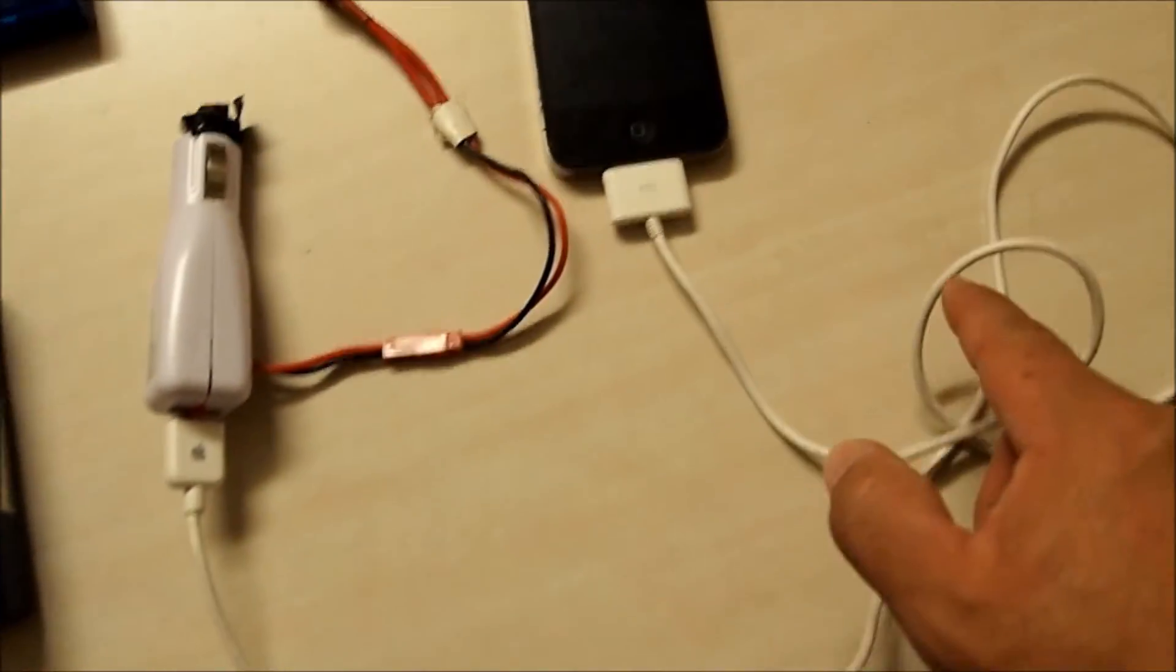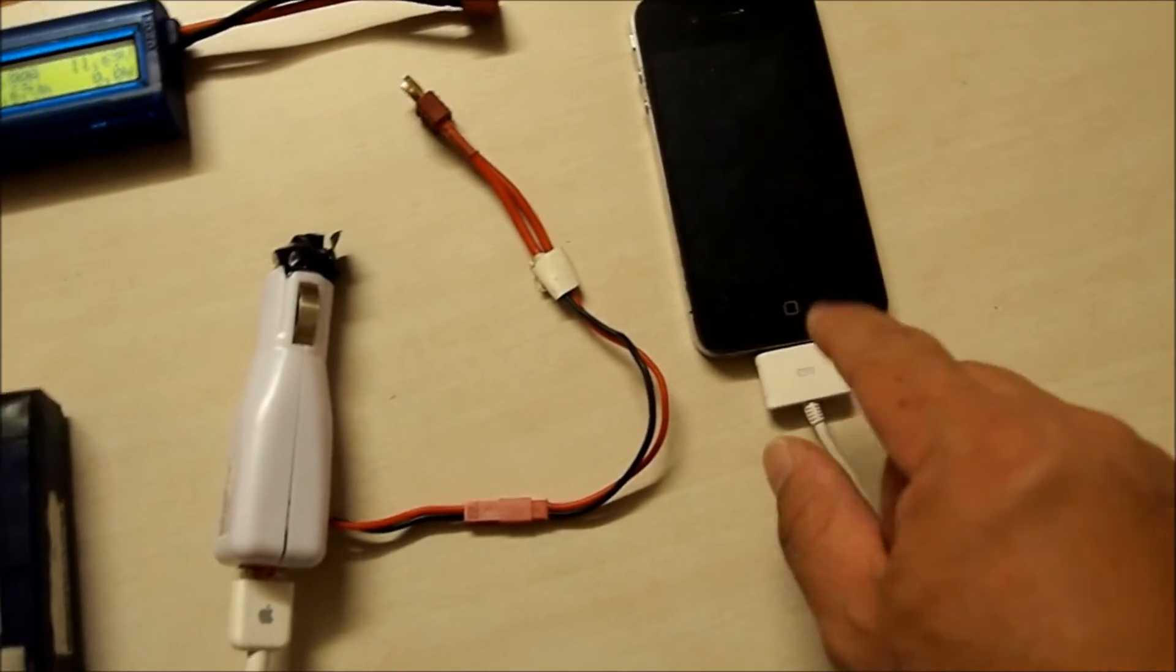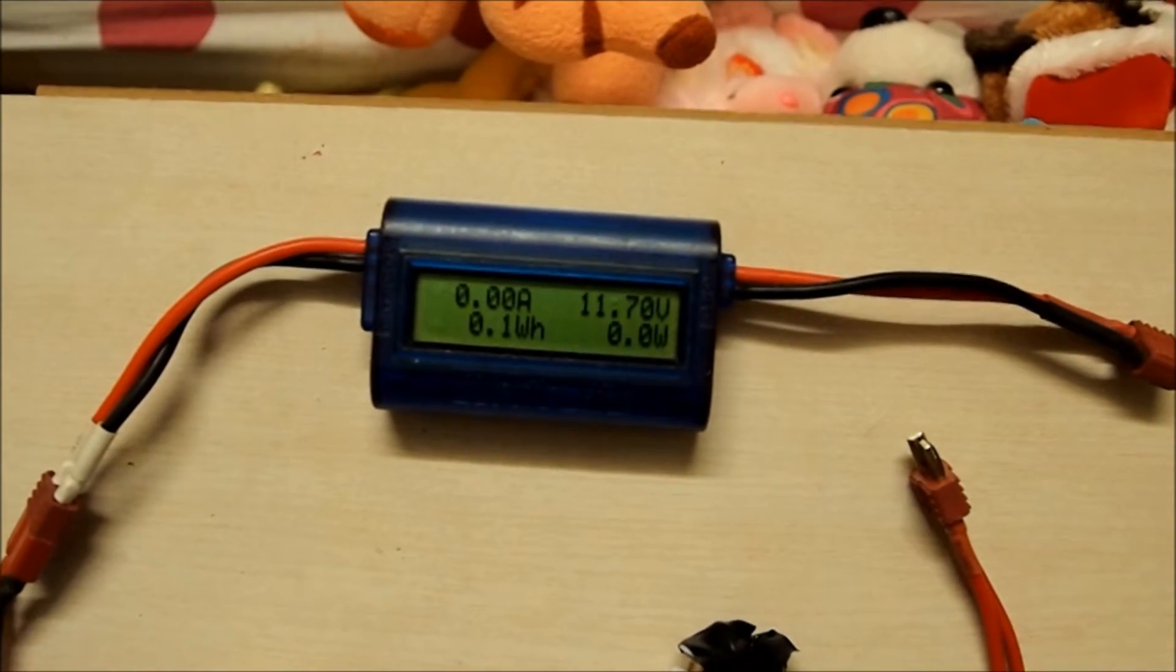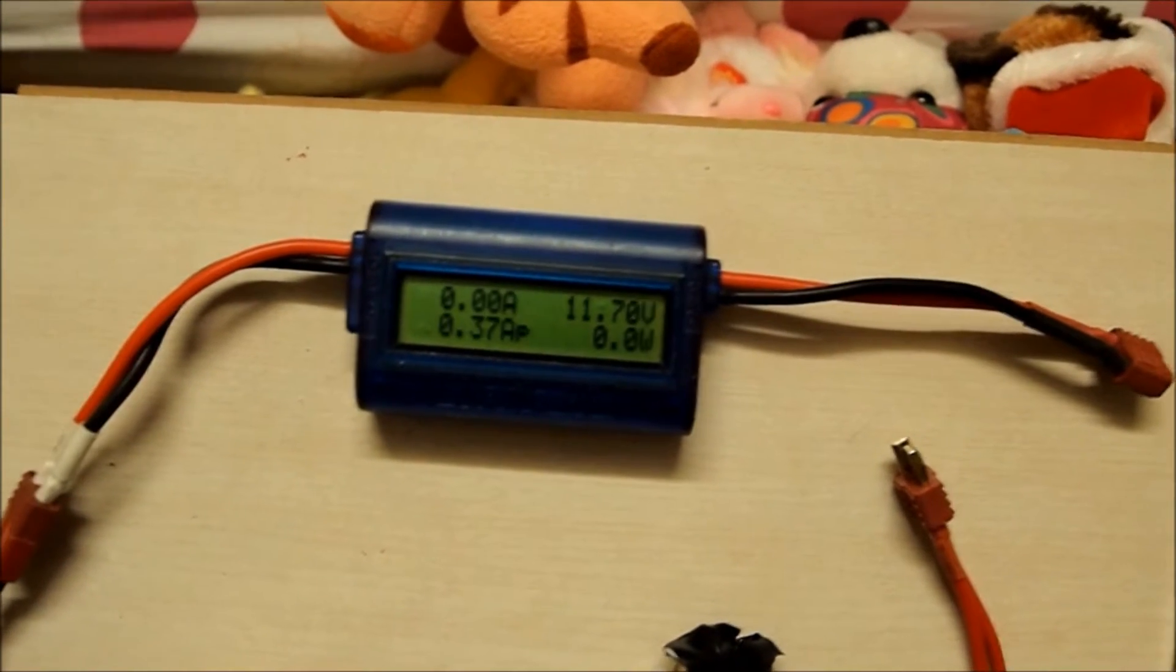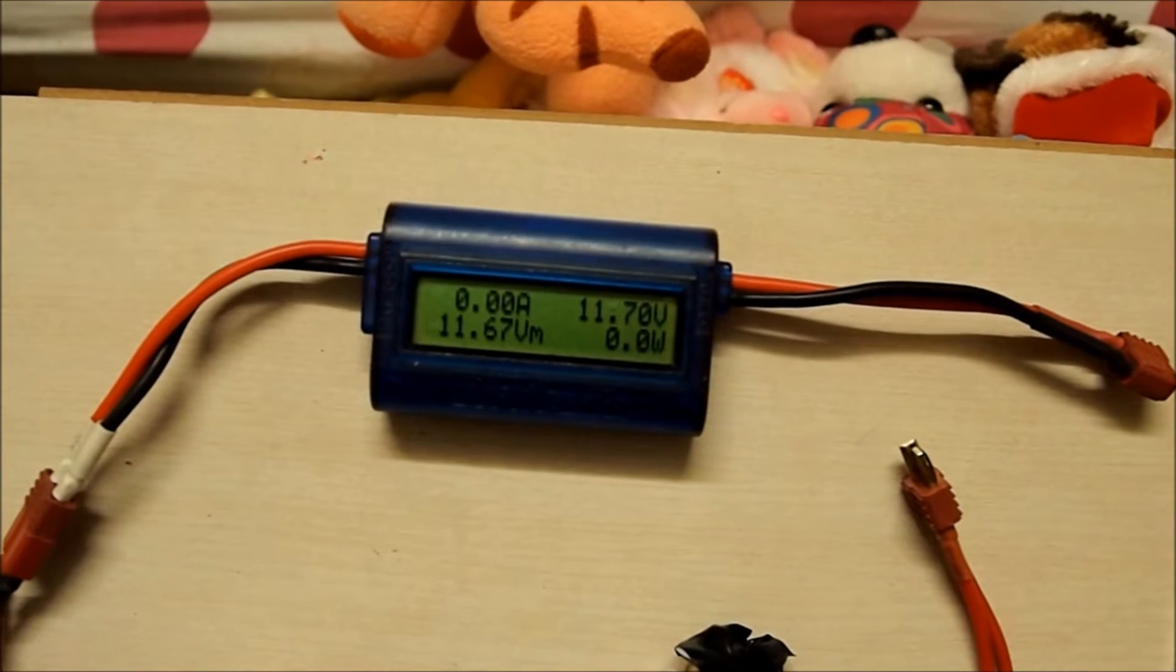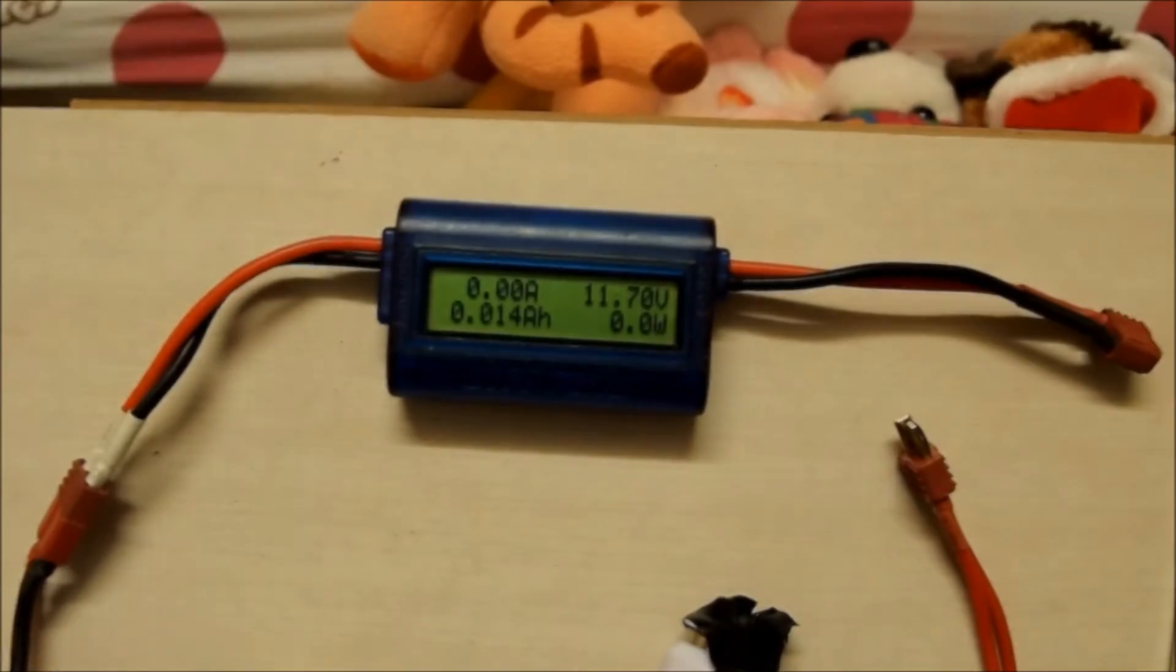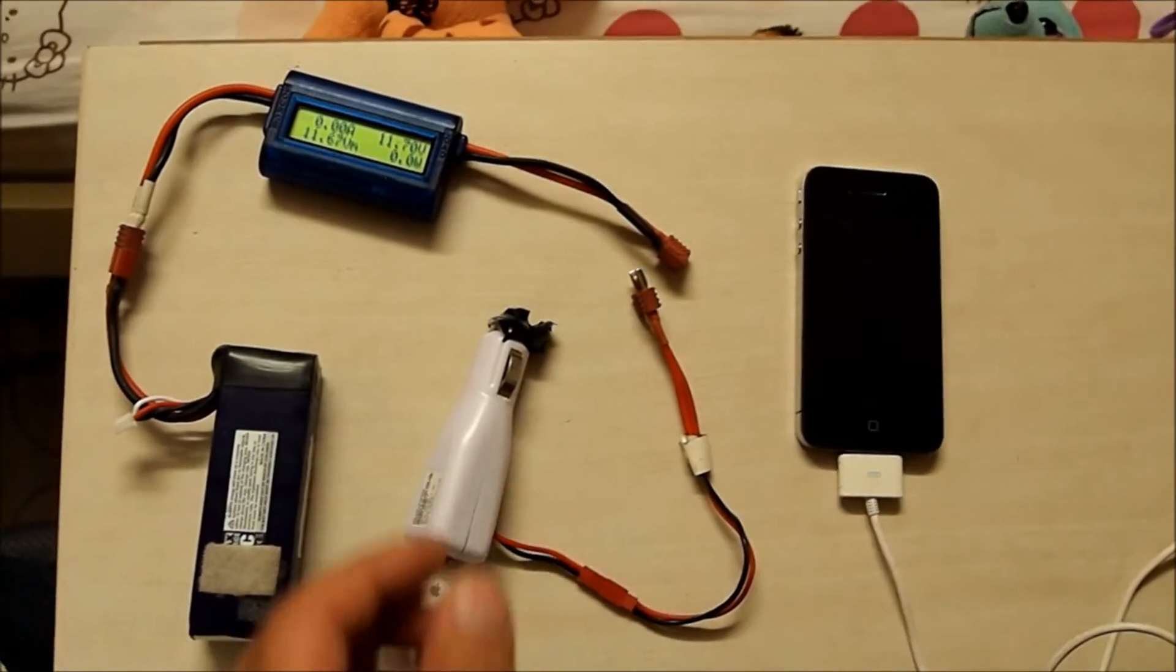You can see without the iPhone plugged in, it reads at zero amps. The LiPo battery is at 11.7 volts. So let's plug it in and see what it reads.